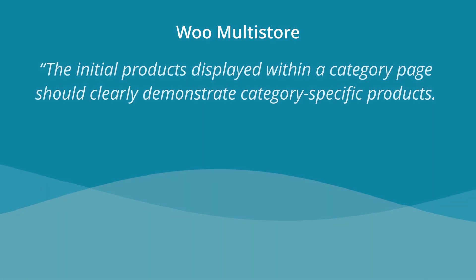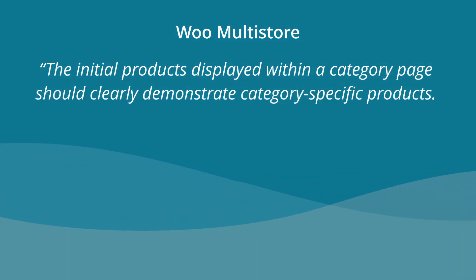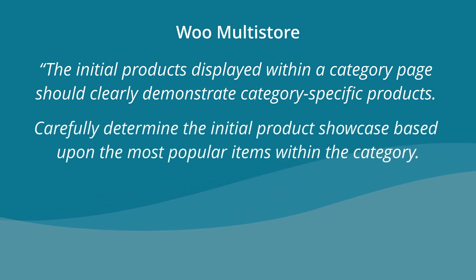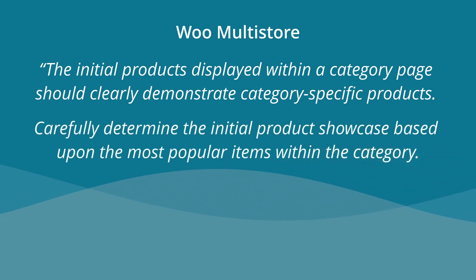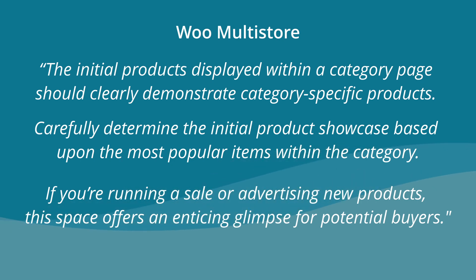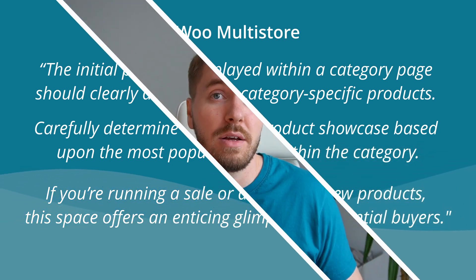They write: the initial products displayed within a category page should clearly demonstrate category-specific products. Carefully determine the initial product showcase based upon the most popular items within the category. If you're running a sale or advertising new products, this space offers an enticing glimpse for potential buyers. So that's all well and good, but how do you actually modify the category pages within WooCommerce?